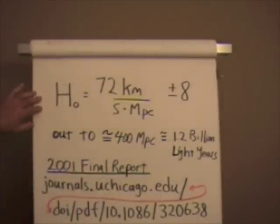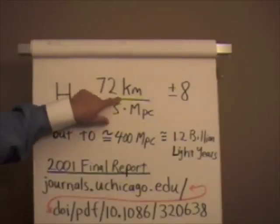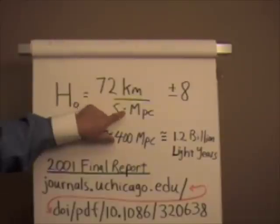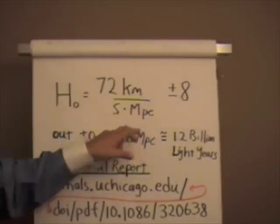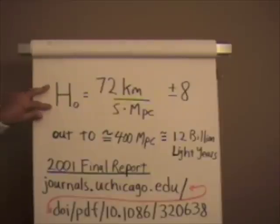And here it is, the Hubble constant H-naught. And here's one value for the Hubble constant, 72 kilometers per second per megaparsec plus or minus 8 kilometers per second per megaparsec. That was the value for the Hubble constant calculated and derived by the Hubble Space Telescope key project team in 2001 in their final report, which was one of the main reasons why the Hubble Space Telescope was sent into space.